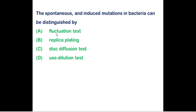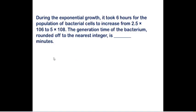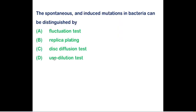Spontaneous and induced mutations in bacteria can be distinguished by the fluctuation test, Ames test, and replica plating technique — option A and option B are correct. Option C (disk diffusion method) is used to determine sensitivity of bacteria to antibacterial agents, and option D (tube dilution test) is used to determine the minimum inhibitory concentration of microorganisms to various antibiotics.